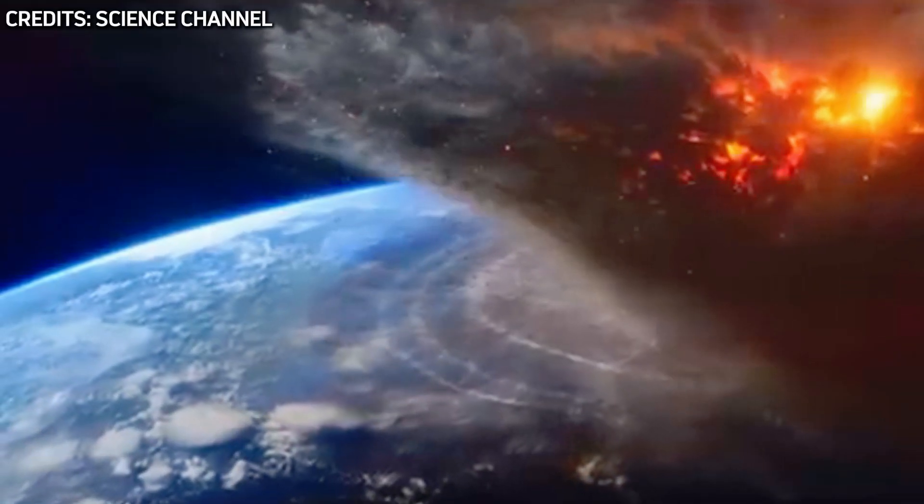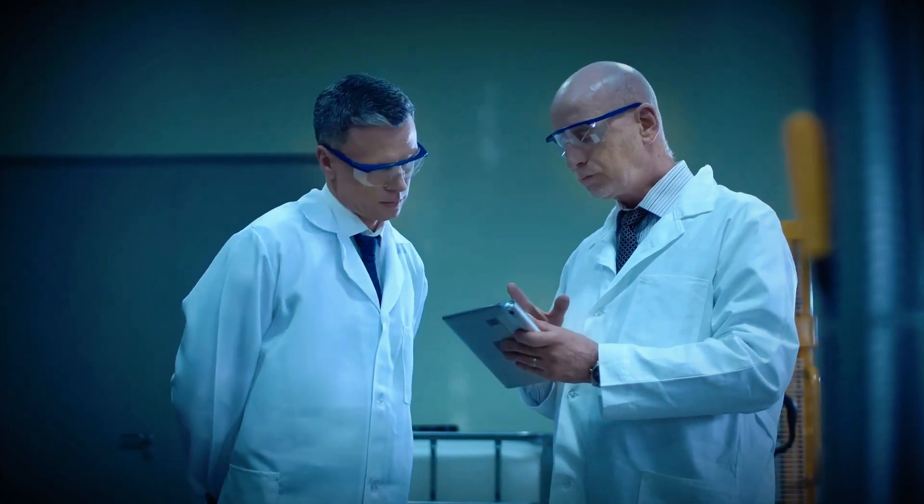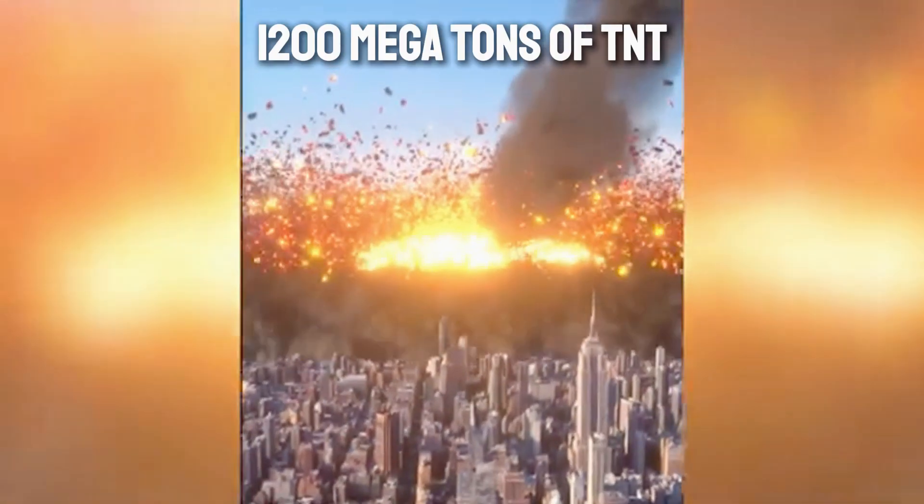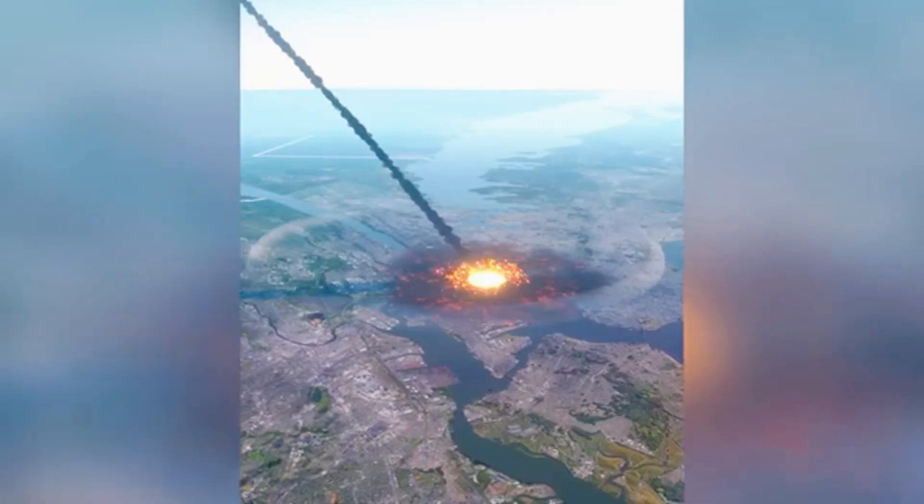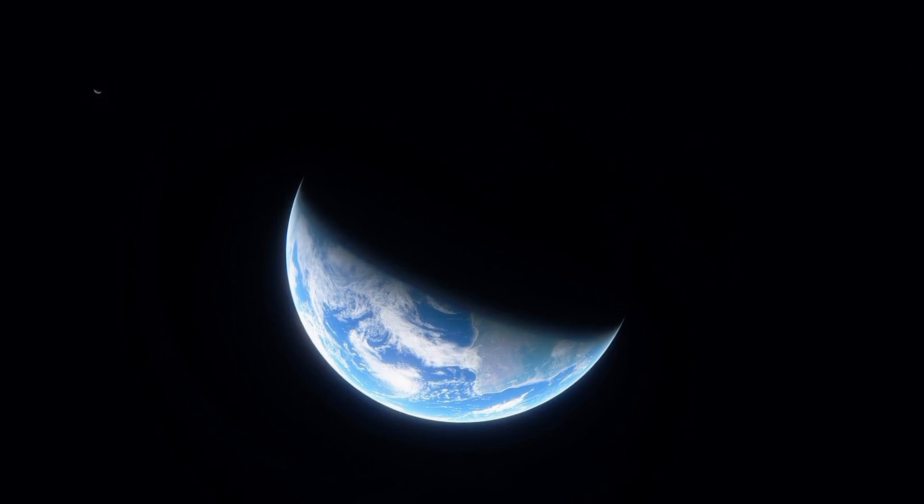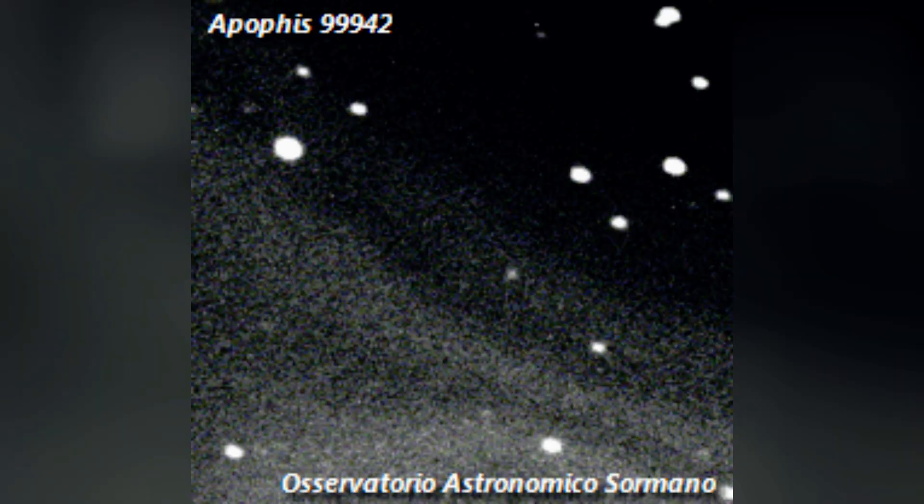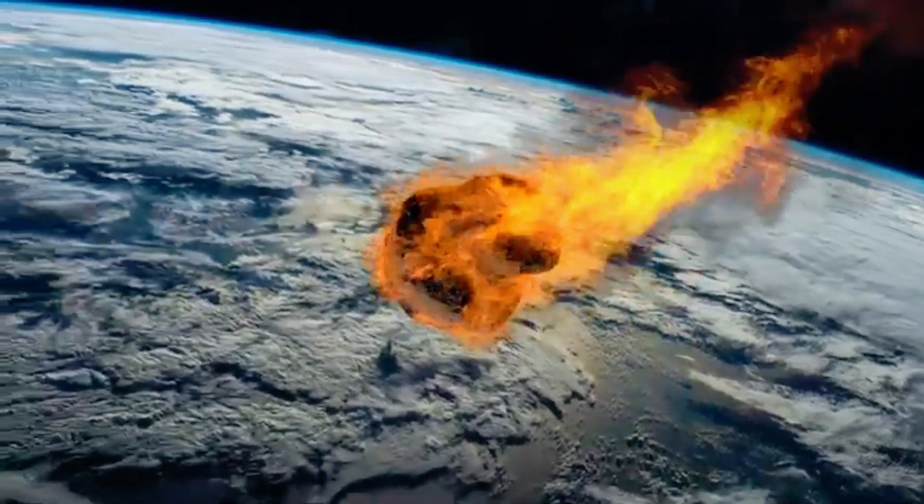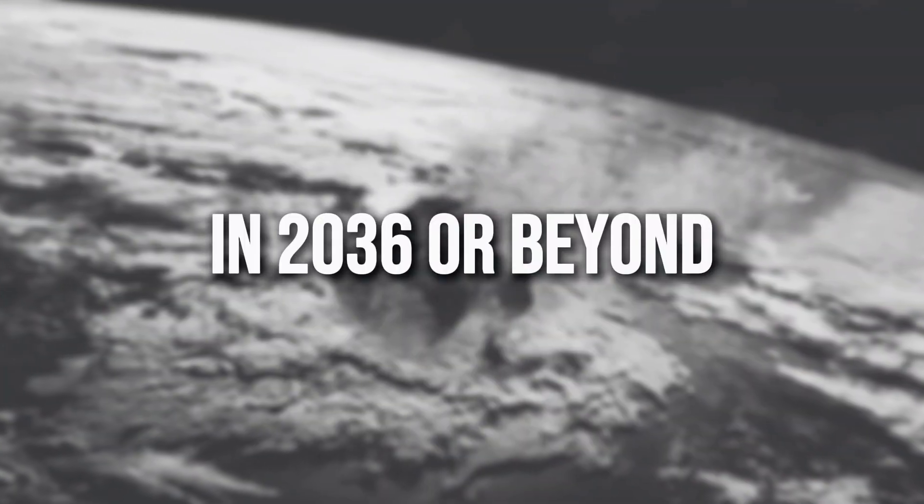Initially, scientists feared it might collide, but updated calculations have ruled out an impact, for now. A direct impact from Apophis could unleash energy equivalent to 1,200 megatons of TNT, enough to flatten an entire country. Even though a collision is no longer expected in 2029, its future orbits remain unpredictable. Earth's gravity will tug at it, possibly altering its course for future flybys in 2036 or beyond.